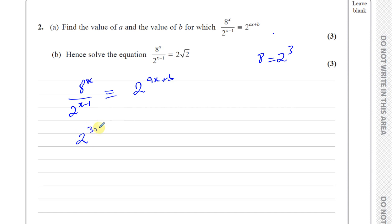So that's 2 to the power of 3X over 2 to the power of X minus 1, identical to 2 to the power of aX plus b. I'm going to combine these two together by subtraction, so you get 2 to the power of 3X minus (X minus 1), identical to 2 to the power of aX plus b.